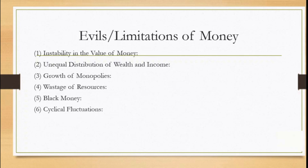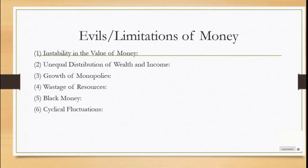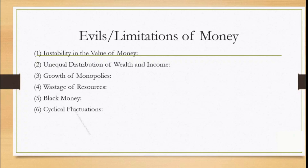Next point: cyclical fluctuation. Another defect of the institution of money is that it leads to cyclical fluctuations in the economy. When the supply of money increases it leads to a boom, and when it contracts there is a slump. In a boom, output, employment, and income increase, which leads to overproduction. On the contrary, they decline during depression, thereby leading to under-consumption. Such cyclical fluctuations bring untold miseries to the people.